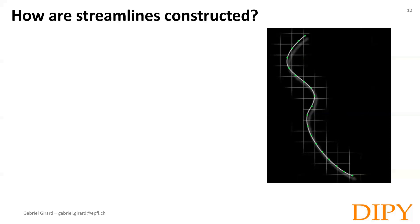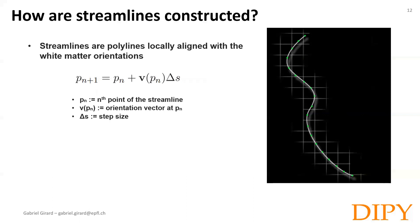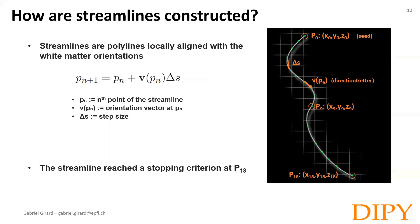Streamlines, or polylines, locally align with the white matter orientation. Each streamline is constructed from a sequence of 3D points Pn, where P(n+1) = Pn + the selected orientation vector V at the current location times a step size Δs. Here we have our seed position P0. V6 is the orientation connecting P6 and P7 with step size Δs. This process is repeated until a stopping criterion is reached — in this case at P18.